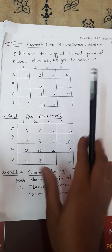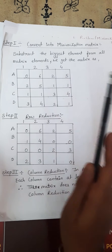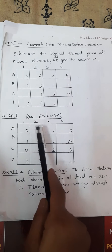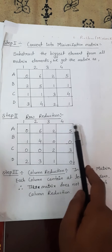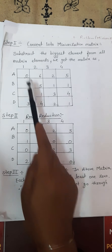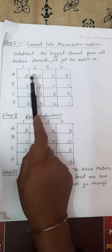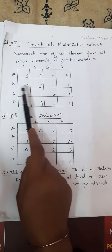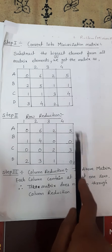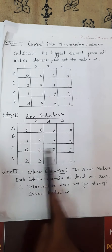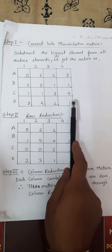Our converted matrix is now ready. We go through row reduction. In row reduction, we subtract the minimum element in each row from all elements in that respective row. The minimum element in row 1 is 0, and in row 2 is 0 — subtracting 0 gives the same values. The minimum element in row 3 is 1; subtracting 1 from all elements gives the reduced row. Similarly for row 4, the minimum is 1 and we subtract it.